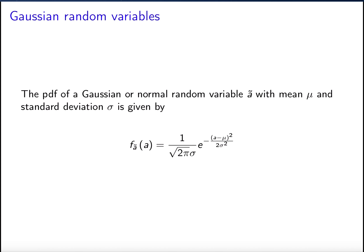The PDF of a Gaussian random variable with mean mu and standard deviation sigma is given by this exponential squared form, as we already saw. Remember that mu and sigma are parameters, but they are also actually equal to the mean and the standard deviation of the distribution.